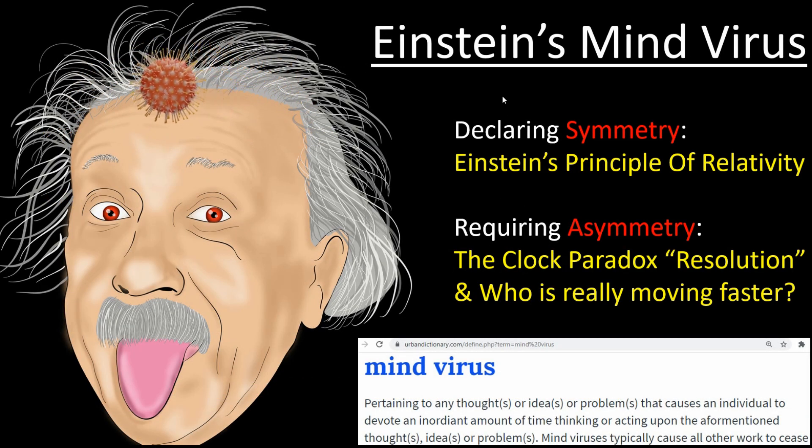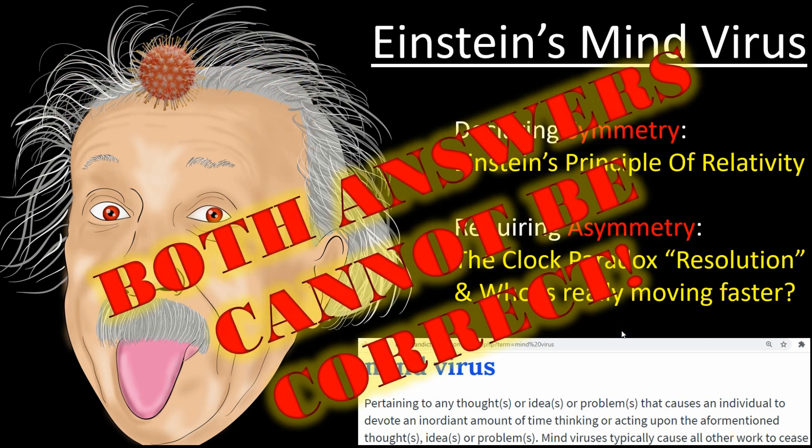So here we have an example of Einstein's mind virus. The theory declares a symmetrical relationship, but this theory requires asymmetry in order to resolve the clock paradox, or to figure out who is actually moving faster. Symmetry and asymmetry are exact opposites, so both of these cannot be correct. So why does Einstein's theory have the principle of relativity if you're always trying to get rid of it to resolve these paradoxes?